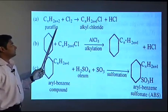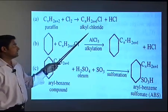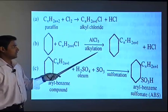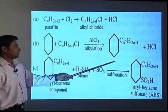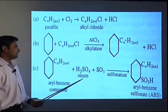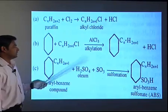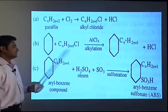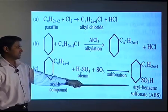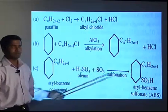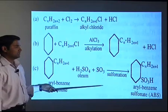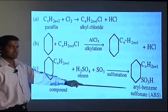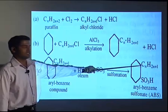In the reaction, paraffin when chlorinated gives alkyl chloride. Then alkyl chloride with cyclic compounds in the presence of aluminium chloride catalyst gives aromatic compounds. These are then reacted with sulphates to give aromatic sulphonates. Here the alkyl benzene sulphonate, ABS, is obtained. The aromatic rings give alkyl benzene sulphonate, and one example is linear alkyl benzene sulphonate when the chain is a linear one.